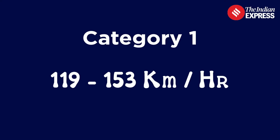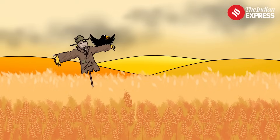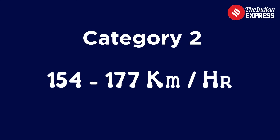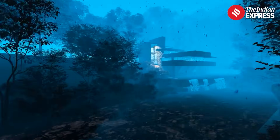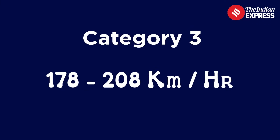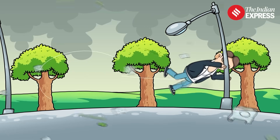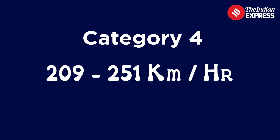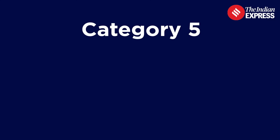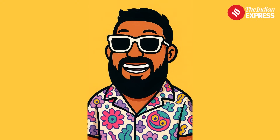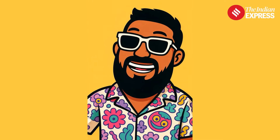Category 1: winds from 119 to 153 kilometers per hour. Minor damage — your Wi-Fi may go, but your roof stays. Category 2: 154 to 177 kilometers per hour. Strong winds, some roof damage, maybe. Category 3: 178 to 208 kilometers per hour. Major damage — trees, windows and egos all shattered. Category 4: 209 to 251 kilometers per hour. Severe devastation. And Category 5: 252 kilometers per hour and above — catastrophic. Keep in mind, this scale only measures wind speed. Garnished with rainfall and flooding, they can be even worse.